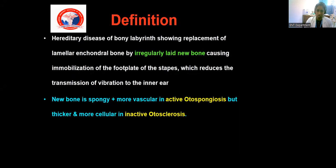What is meant by otosclerosis? Otosclerosis is defined as the hereditary disorder of the bony labyrinth in which the normal lamellar bone is replaced by the irregularly spongy bone. Normally, the bony labyrinth has three layers: endosteal, endochondral, and periosteal layer, in which the endochondral layer has some cartilage rests which usually ossify later in life. But here in otosclerosis, these cartilage rests form a spongy bone which is an irregular bone with a tendency to become a hard bone later, causing sclerosis of the stapes and cochlea leading to otosclerosis.